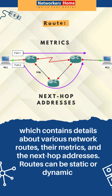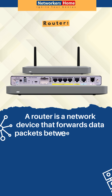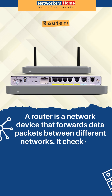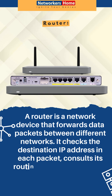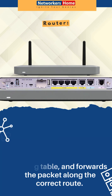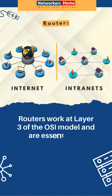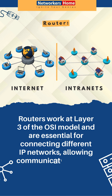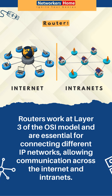Routes can be static or dynamic. A router is a network device that forwards data packets between different networks. It checks the destination IP address in each packet, consults its routing table, and forwards the packet along the correct route. Routers work at Layer 3 of the OSI model and are essential for connecting different IP networks, allowing communication across the internet and intranet.